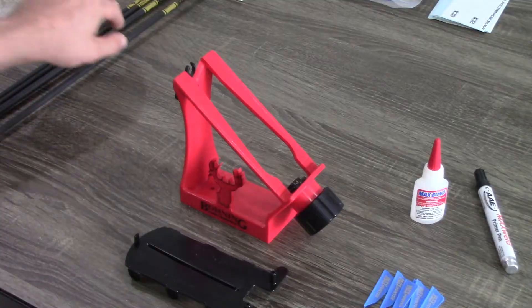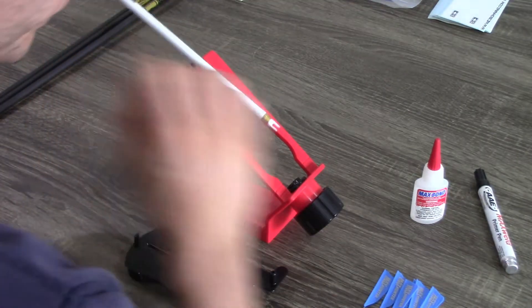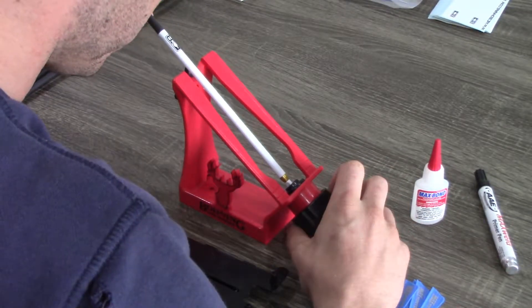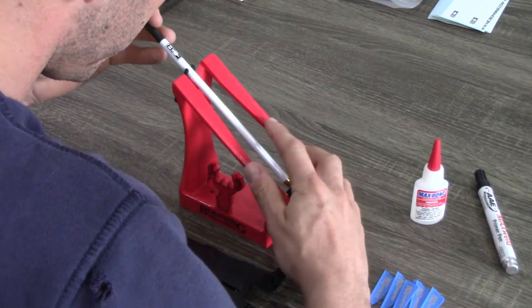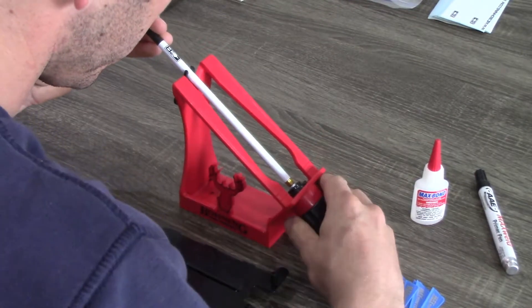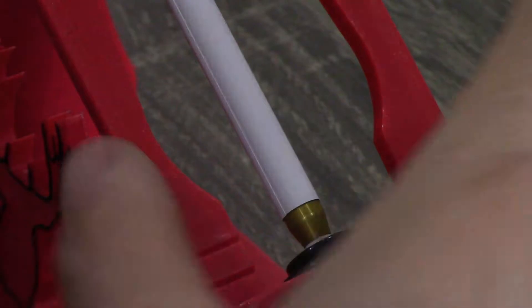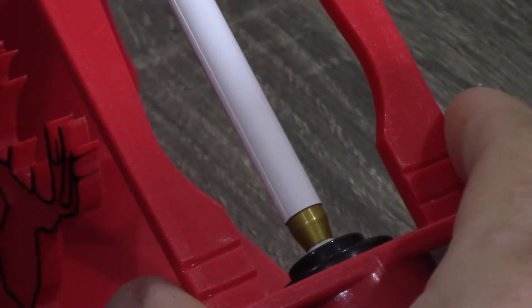Now to fletch the arrows, I decided to go with an AAE Max Hunter Fletch in a four-fletch configuration. I'm trying to get the most stabilization I can out of these arrows, and I believe this fletch and this combination will give me the best stabilization.